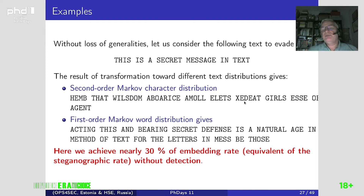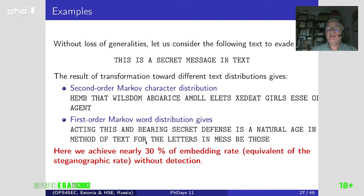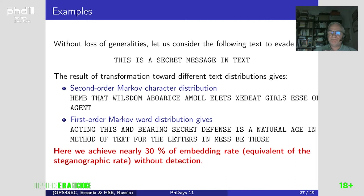Let us consider examples. Just imagine I want to embed a secret message — we would first encrypt it, but this is just for illustration. The result of transformation towards different text distributions: using a second-order Markov distribution gives one text, but with a first-order Markov word distribution you obtain something far closer to English. Recently, we have achieved an embedding rate of nearly 30%, which is far higher than any undetectable steganography technique, and without detection.